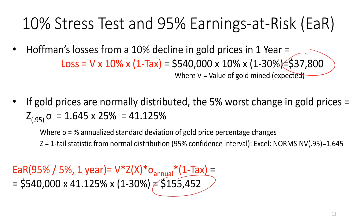I'm going to calculate Hoffman's exposure to gold. The first thing I'm going to do is a deterministic measure — I'm just going to say how much would Hoffman lose if gold prices are down 10% from expected. I'll call that a 10% stress test on gold. The after-tax loss is equal to the value of their revenues — that's the amount of gold times the price of gold times a 10% drop, leaving it as a positive number.